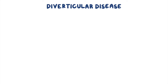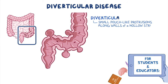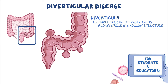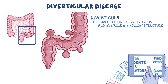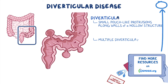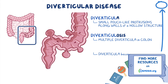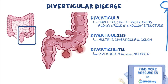Diverticular disease is a condition characterized by the formation of diverticula, which are small, pouch-like protrusions that form along the walls of a hollow structure, most commonly the large intestine. Having multiple diverticula in the colon is called diverticulosis, and if one or more of these diverticula become inflamed, that's called diverticulitis.